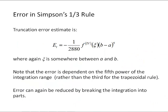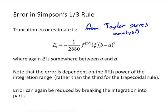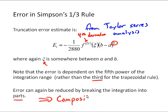Let's look at the error in Simpson's one-third rule. The truncation error estimate comes from a Taylor series analysis, the details of which are beyond our scope. The error is proportional to the fourth derivative and b minus a to the fifth, where zeta is some point in the integration range a to b. The errors depend on the fifth power of the integration range, compared to the third for the trapezoid rule. One approach to make this more accurate is to break the integration into parts and use a composite Simpson's rule.